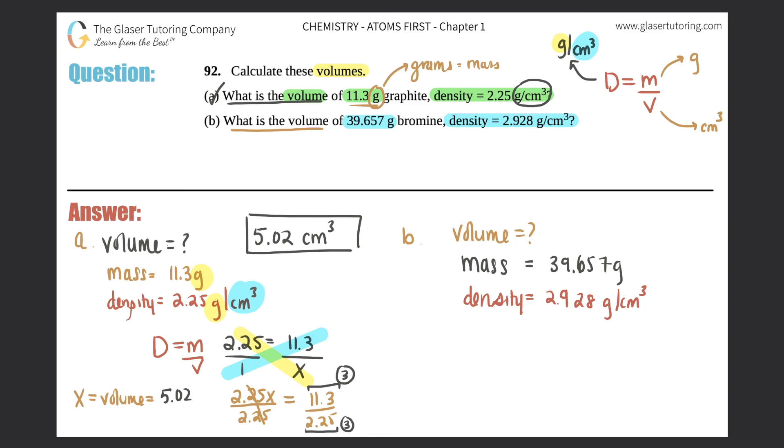Now straight to the density formula. Let's just see if we can plug in - the mass unit was in grams and the unit for mass for density was also in grams, so they match. We can just say D equals m over V, plug in the numbers: 2.938 equals 39.657 over x. Cross multiplication - this times this equals this times this. Remember, this is over one.